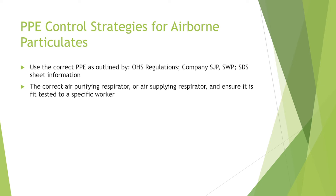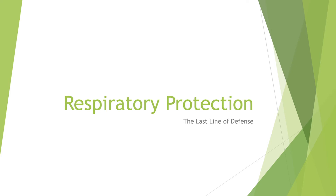Personal protective control strategies: use the correct PPE as outlined by OHS regulations, safe job practices, SDS sheet information, and any governing body, as long as you don't have other controls in place or the controls are not fully adequate. You'll want to choose the correct air-purifying respirator with the correct cartridges, or an air-supplying respirator if it is immediately dangerous to life and health. Ensure either of those devices is fit tested to a specific worker. Respiratory protection is your last line of defense.